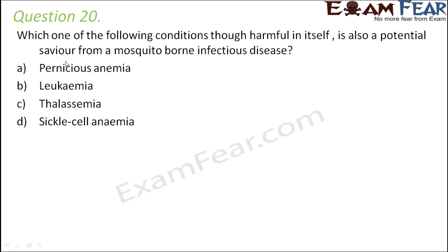Question number 20: which one of the following conditions, though harmful in itself, is also a potential savior from a mosquito-borne infectious disease? The correct answer is sickle cell anemia. Carriers of sickle cell anemia are very less prone to malaria, a mosquito-borne infectious disease. The sickle-shaped RBCs do not allow the malarial parasite to survive. Importantly, carriers of sickle cell anemia do not suffer from the disease — they just carry the gene.